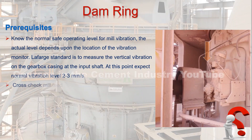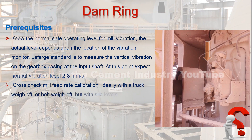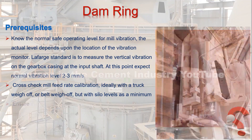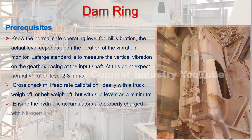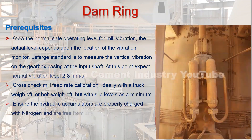Cross-check mill feed rate calibration — ideally with a truck weigh-off or belt weigh-off, but with silo levels as a minimum. Ensure the hydraulic accumulators are properly charged with nitrogen and are free from any leaks.